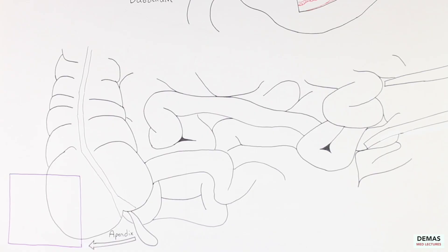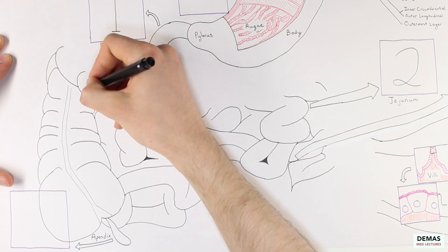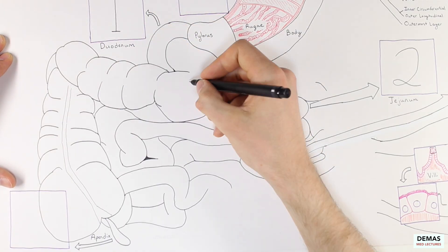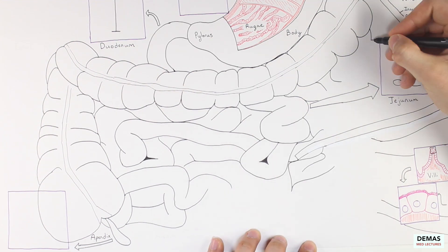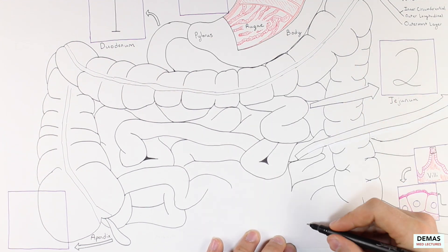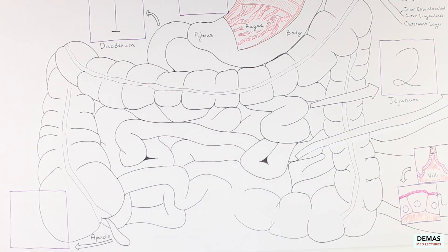The other parts of the colon moving distally are the ascending or right colon, the hepatic flexure which is near the liver, the transverse colon, the splenic flexure which is near the spleen, the descending or left colon, and the sigmoid colon.